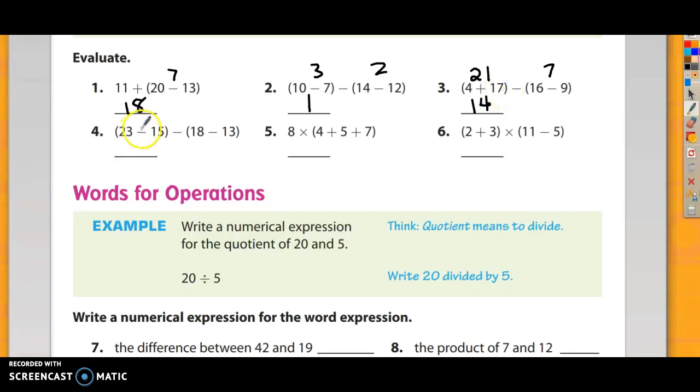Number four, 23 minus 15 is 8, and 18 minus 13 is 5, and 8 minus 5 is 3. Number five, 4 plus 5 is 9, plus 7 is 16, times 8 is 48. 8 times 1 is 8, plus 4 is 12, and it's 128. And number six, I've got 2 plus 3 is 5. That's going to be times 11 minus 5, that's 6. 5 times 6 is 30.